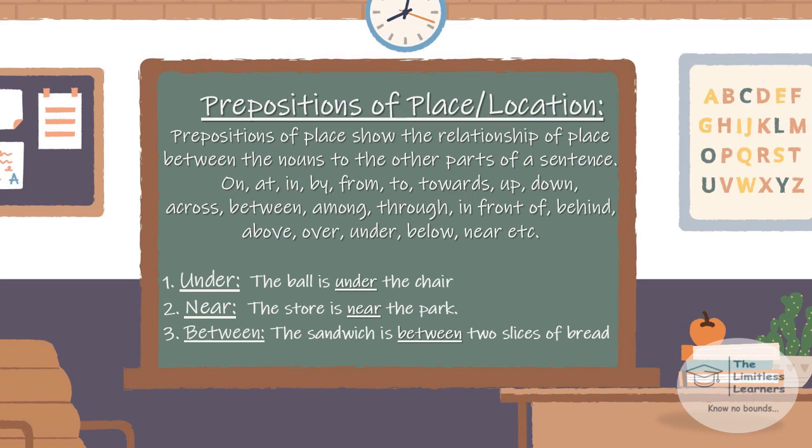Let's see a few examples. 'The ball is under the chair' — the word 'under' is the preposition here. 'The store is near the park' — 'near' is the preposition here. 'The sandwich is between two slices of bread' — 'between' is the preposition of place here because it is telling us the position.